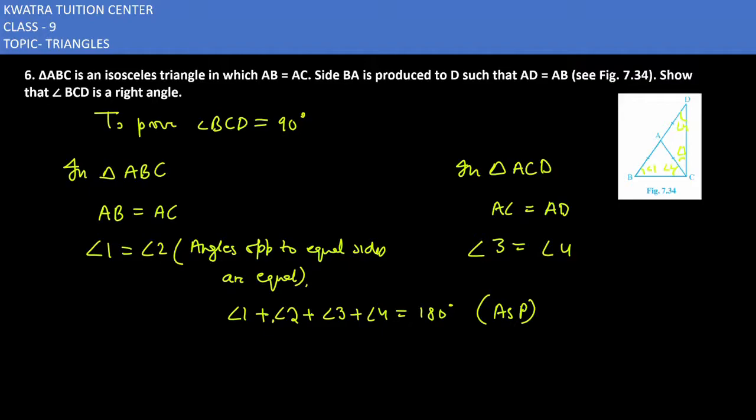Now here, angle BCD plus angle 1 plus angle 4 is equal to 180. The value will be equivalent to 90.